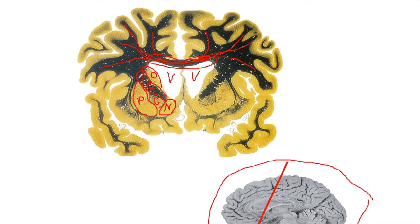Experiments have been done where an electrode was implanted in the nucleus accumbens of rats. The rats were given two buttons: one dispensed food, the other stimulated their nucleus accumbens. When given the choice, these rats would forgo food entirely and repeatedly press the button stimulating their nucleus accumbens — because it gave them that pleasant satisfaction response. These rats would actually starve themselves to death pressing that button, showing just how powerful that sensation can be.